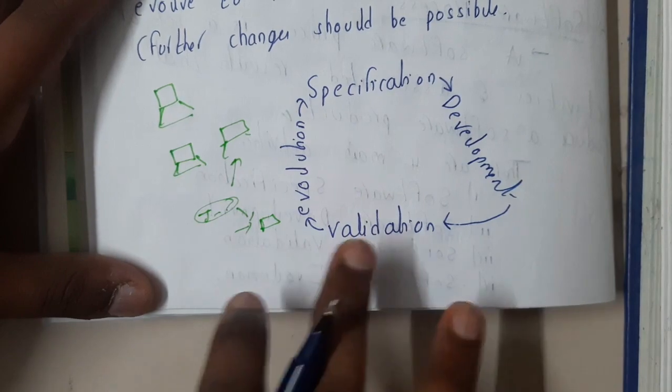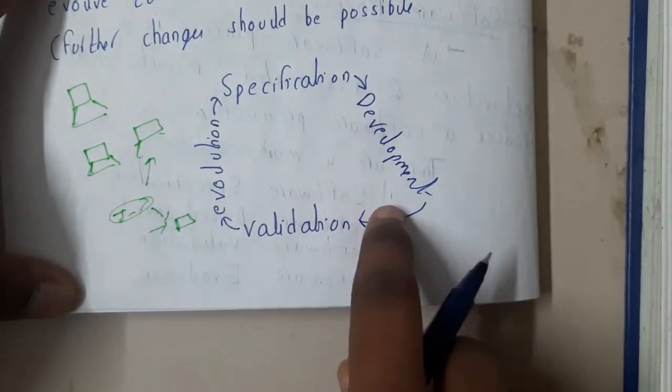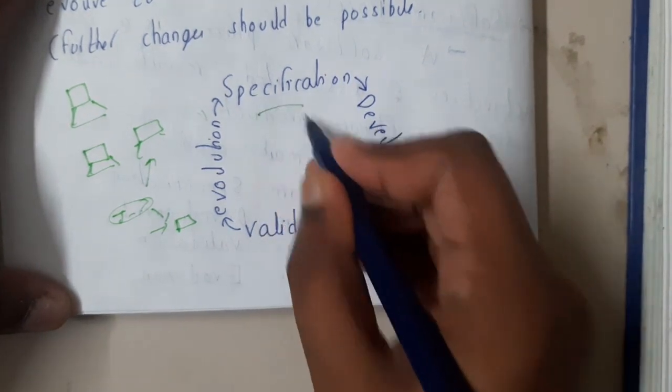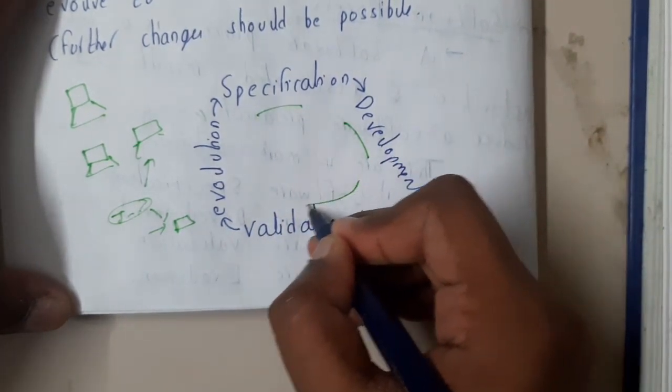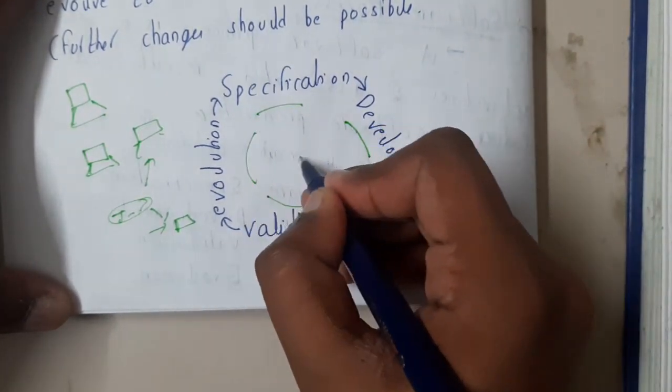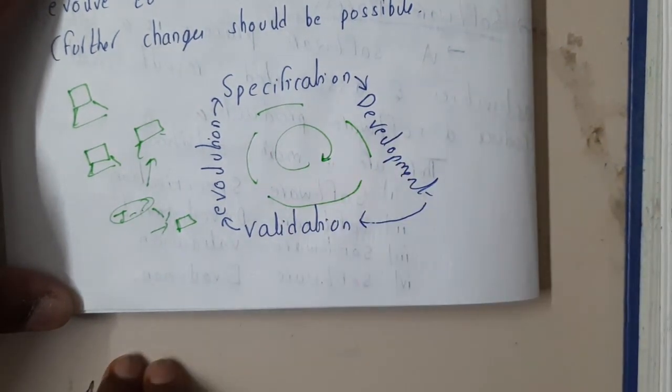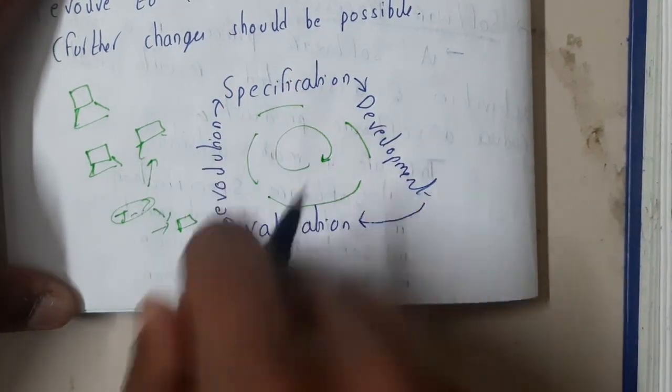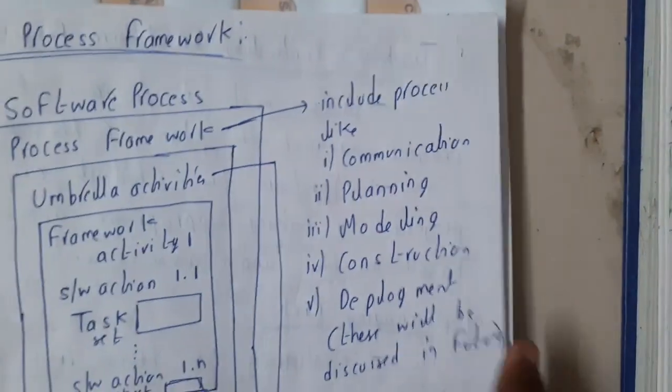So if you just draw a cycle it will be in this way: initially you will be specifying it, after that you'll be developing it, after that you'll be validating it, after that you'll be evaluating it. So this process, the cycle continues. After evaluation you'll be getting new requirements, you'll be again specifying, and the cycle will continue. So I hope everyone got a small basic idea on software process.